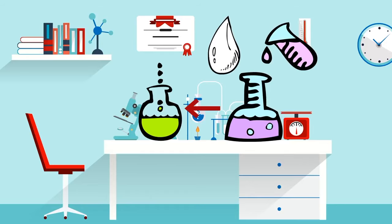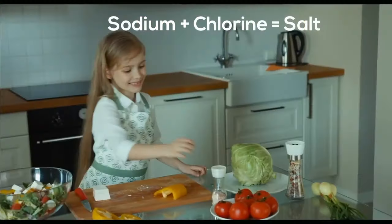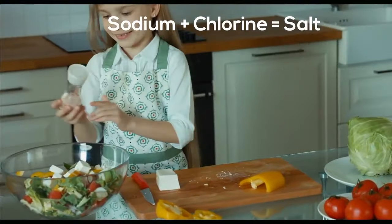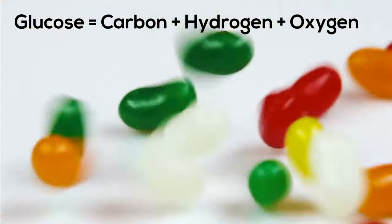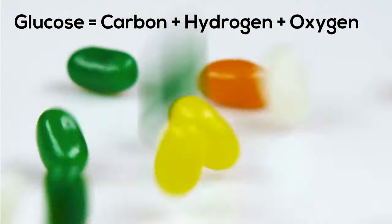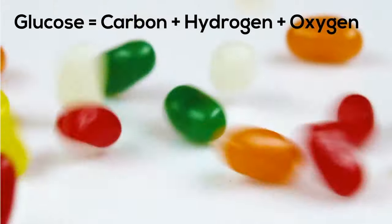Here are some items that combine to make compounds. Table salt is sodium and chlorine. Glucose, a type of sugar, is made of carbon, hydrogen, and oxygen.